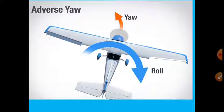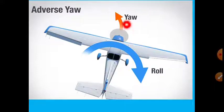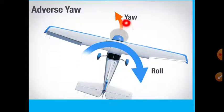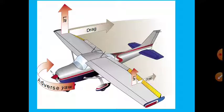Looking at adverse yaw: if the aircraft rolls in one direction, the nose will yaw towards the other direction. This is what adverse yaw means. The aircraft will yaw in the opposite direction of the intended roll on its own.